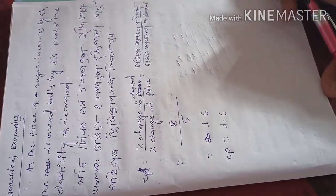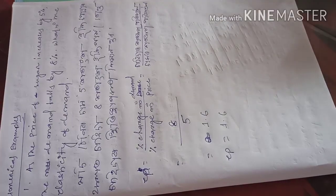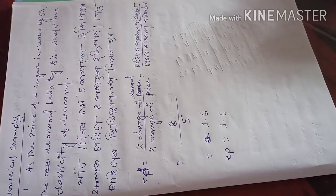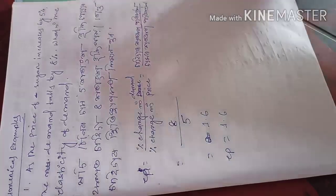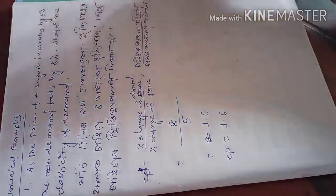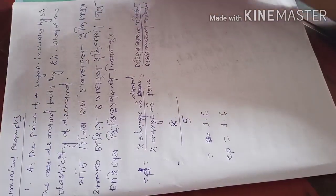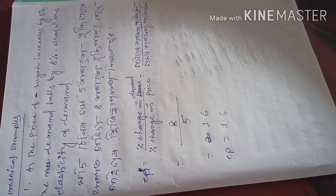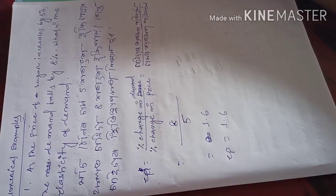We have already discussed the methods used to measure elasticity of demand. Now we can use that method to solve a numerical problem. The first numerical problem: as the price of sugar increases by 5 percent, the demand falls by 8 percent. What is the elasticity of demand?